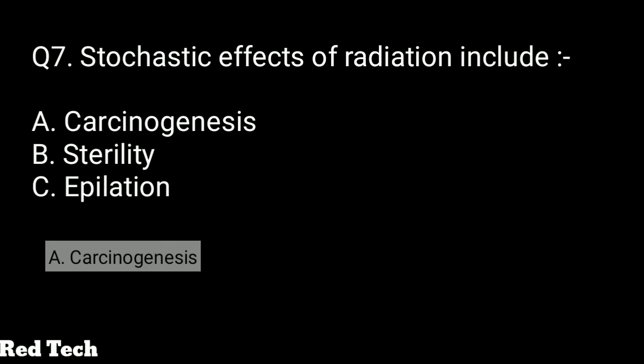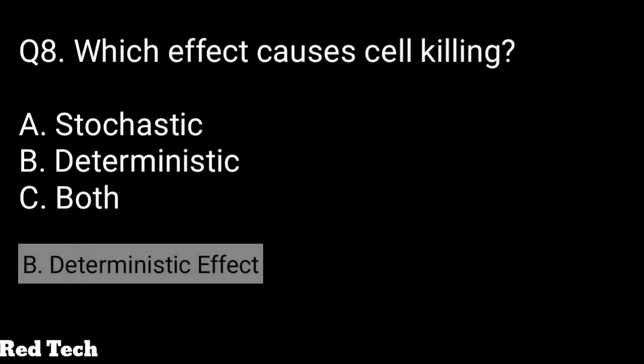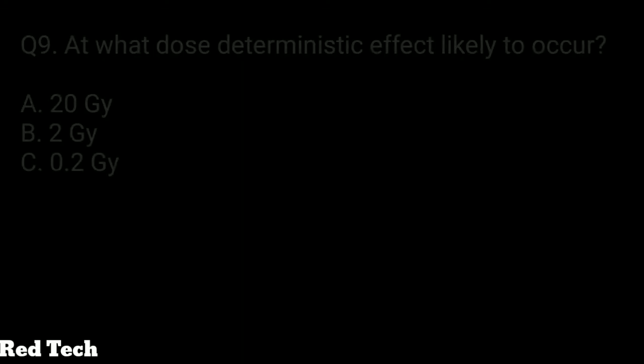Question number eight: which effect causes cell killing? The options are stochastic effect, deterministic effect, or both. The right answer is the deterministic effect — cell killing occurs in a particular tissue area or large area of the human body due to the deterministic effect.